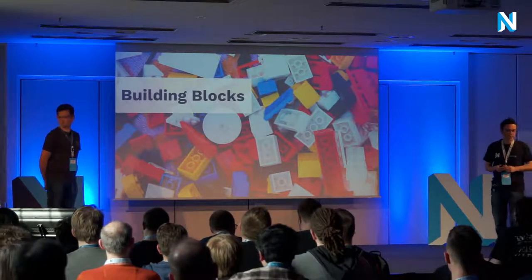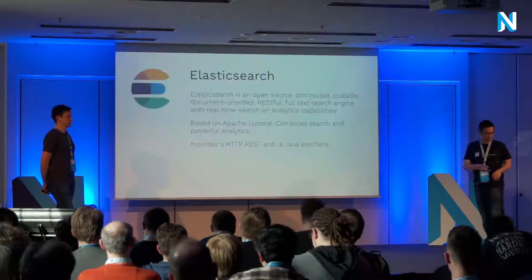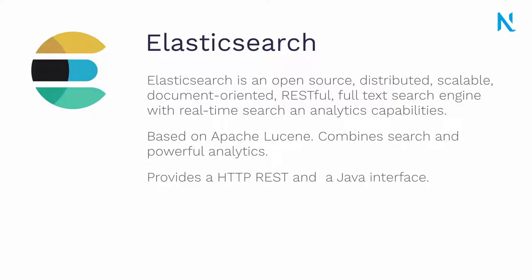For building a search in Neos we have several building blocks. The major one is Elasticsearch itself. Elasticsearch is an open source search engine — it's document-based, based on Apache Lucene like Solr is. It's highly scalable and distributed, and it offers a REST service to index and request search results. The document-based nature and the REST interface make it really perfect to work with Neos and with the content repository.